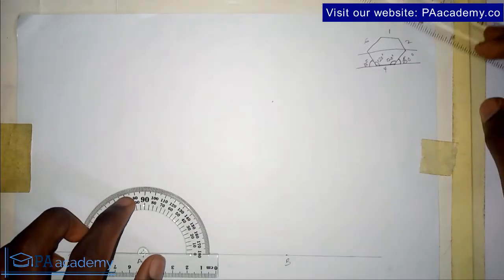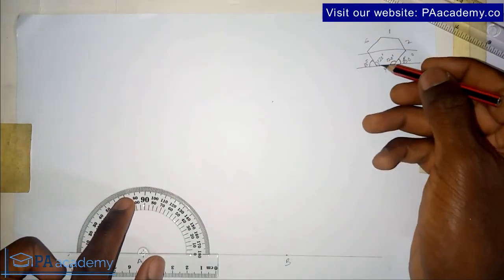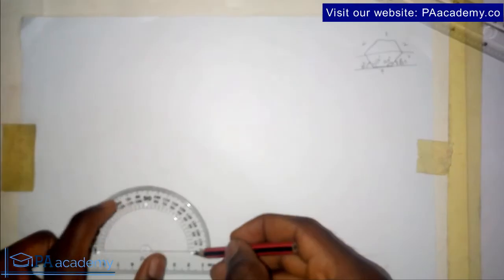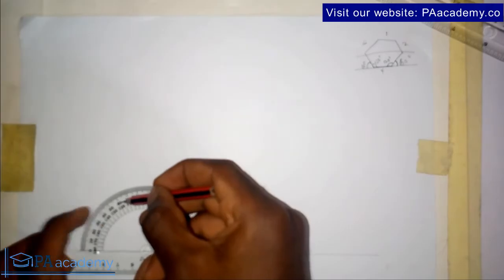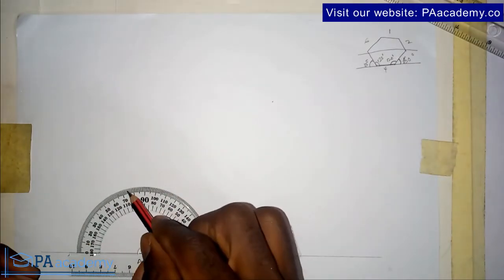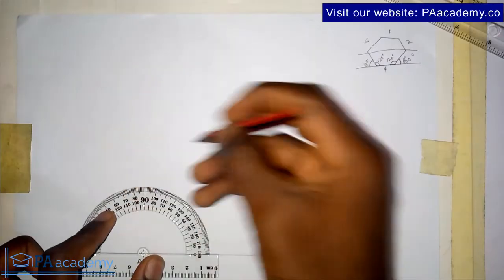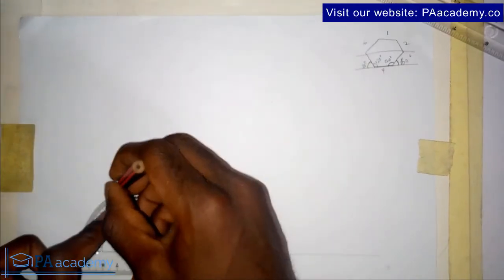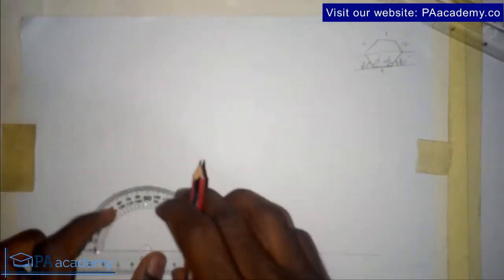Now if you remember what I said here, I said we can either measure 120 degrees - so that means 120 degrees if you are going in this direction - or if you are coming from this direction it will be 60 degrees. Whichever one you want to do, just notice the points.